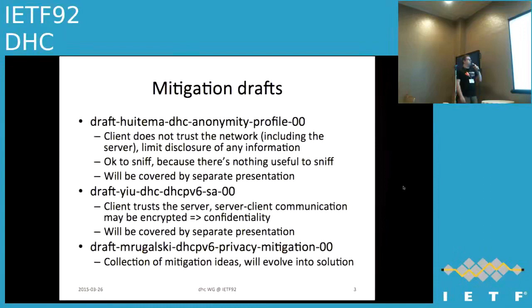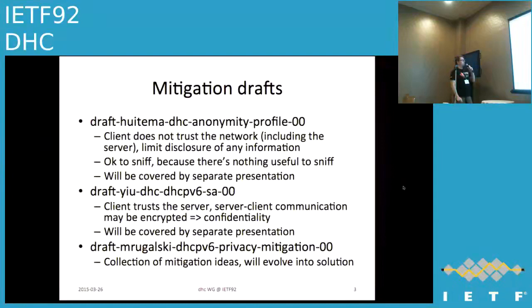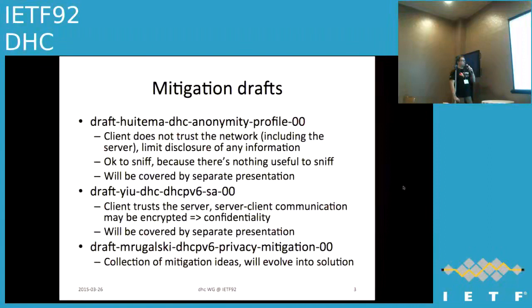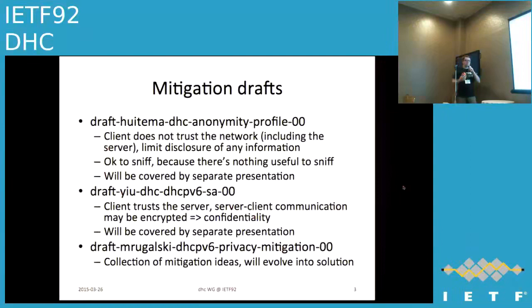Currently there are three drafts that can be considered mitigation drafts. The first is draft-huitema-DHC-anonymity-profile. At a very high level, the assumption is that the client does not trust the network including the server, and tries to limit disclosure of any information — the typical case when you visit an airport Wi-Fi hotspot. This draft will be covered in a separate presentation. Another draft is draft-you-DHC-DHCPv6-SA, the secure access draft, which assumes the server can be trusted and attempts to establish a security relationship with the server. That presentation was cancelled and will be delivered in Prague.